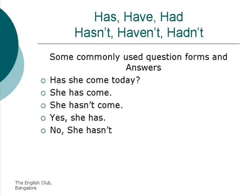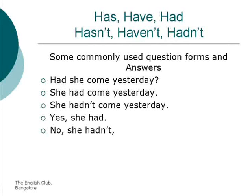Has she come today? She has come. She hasn't come. Yes, she has. No, she hasn't. Had she come yesterday? She had come yesterday. She hadn't come yesterday. Yes, she had. No, she hadn't.